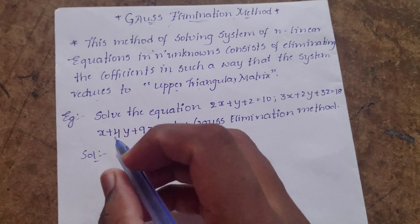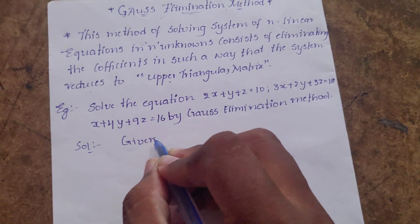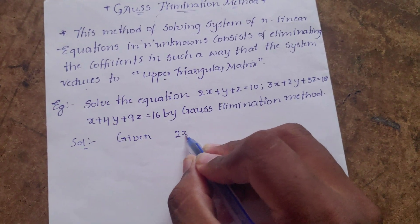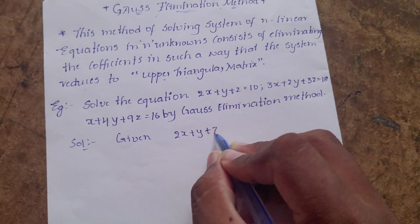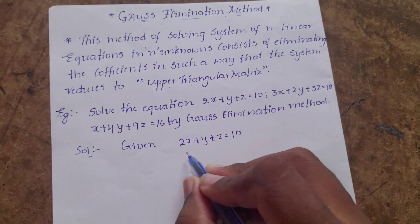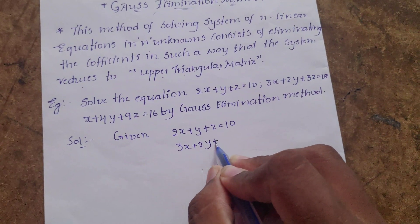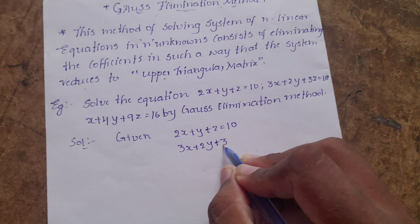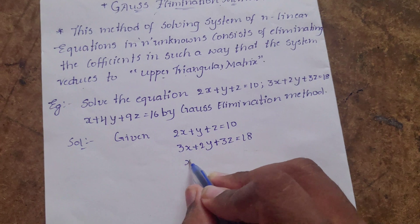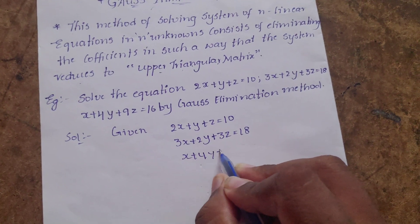So, solve the given equations. Given: 2x plus y plus z is equal to 10, and 3x plus 2y plus 3z is equal to 18, and x plus 4y plus 9z is equal to 16.